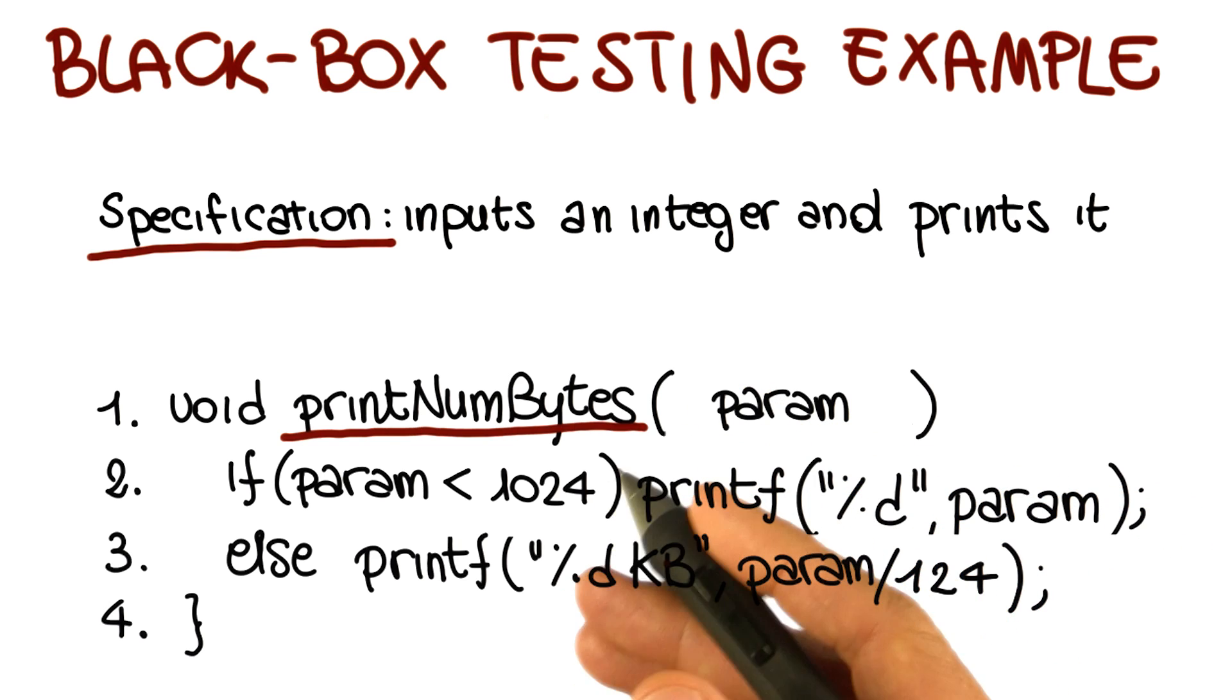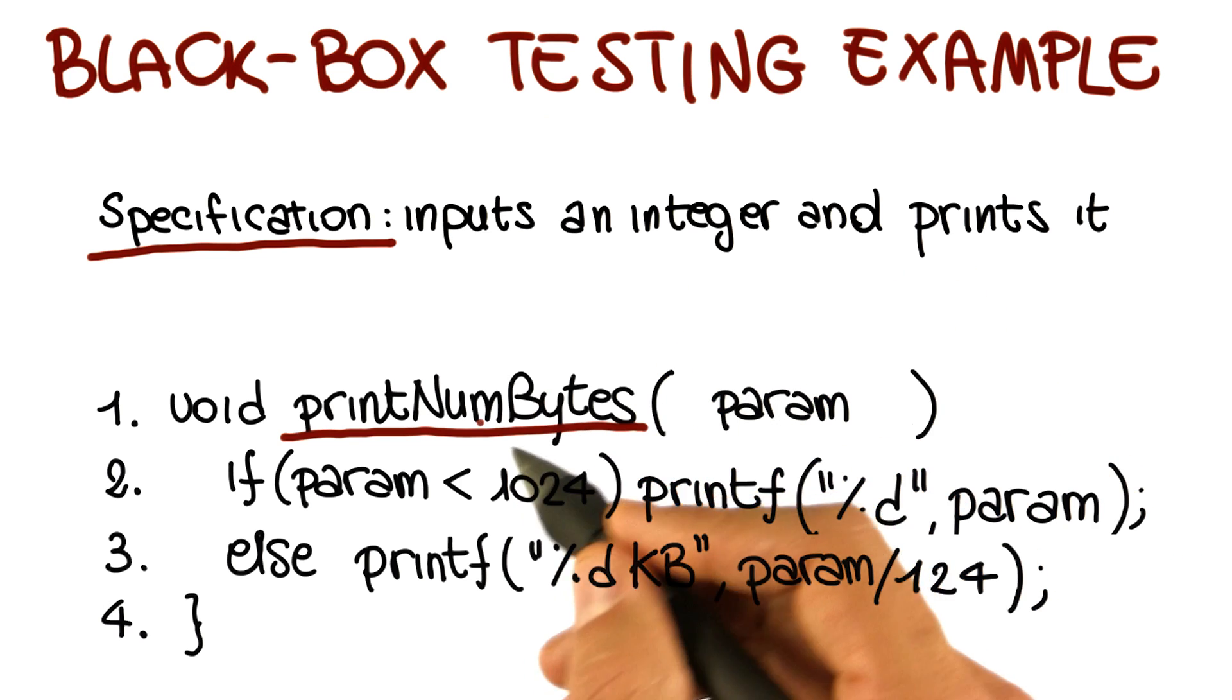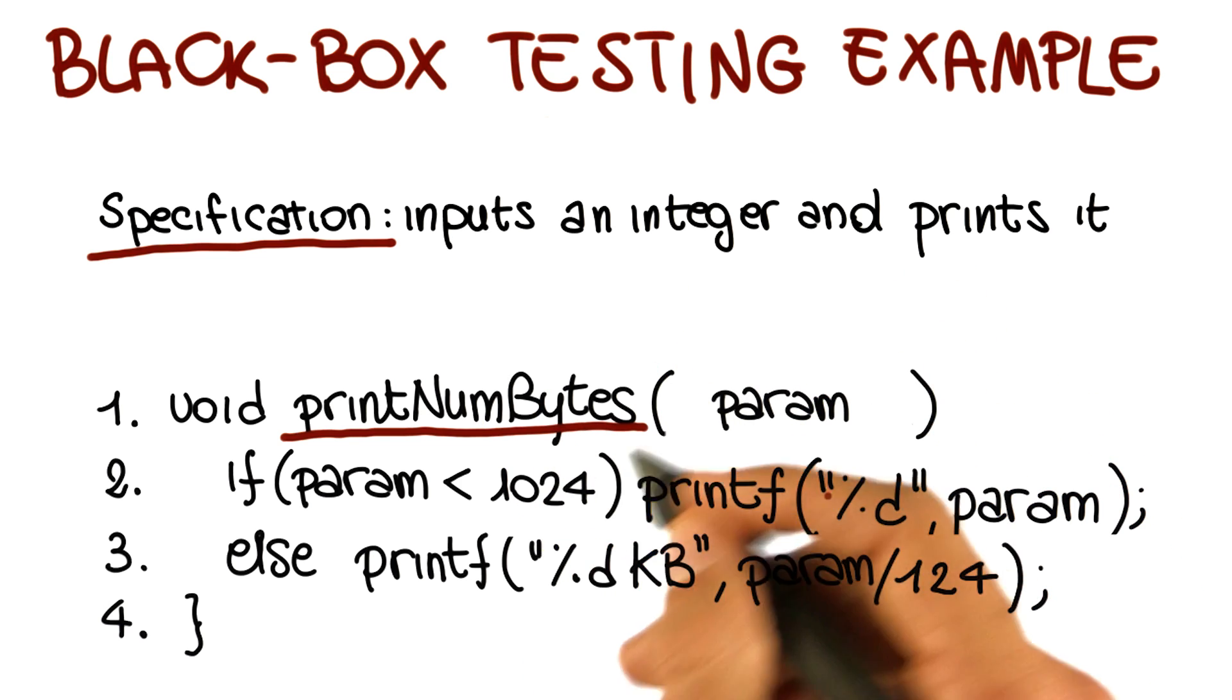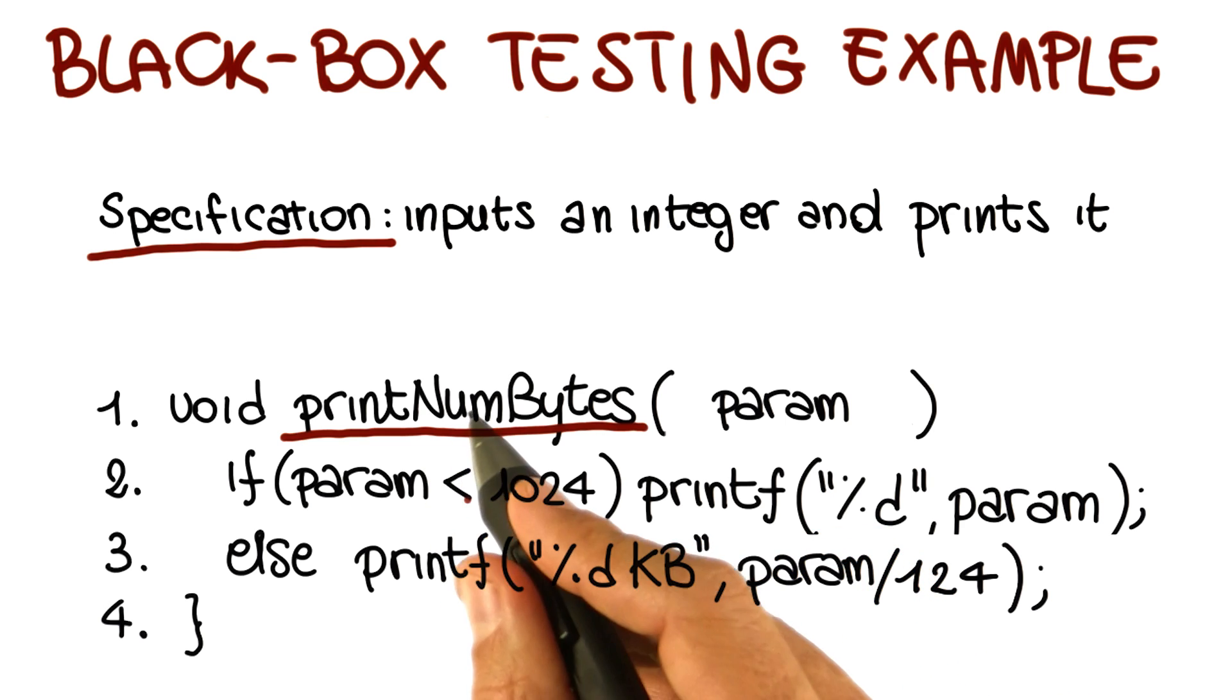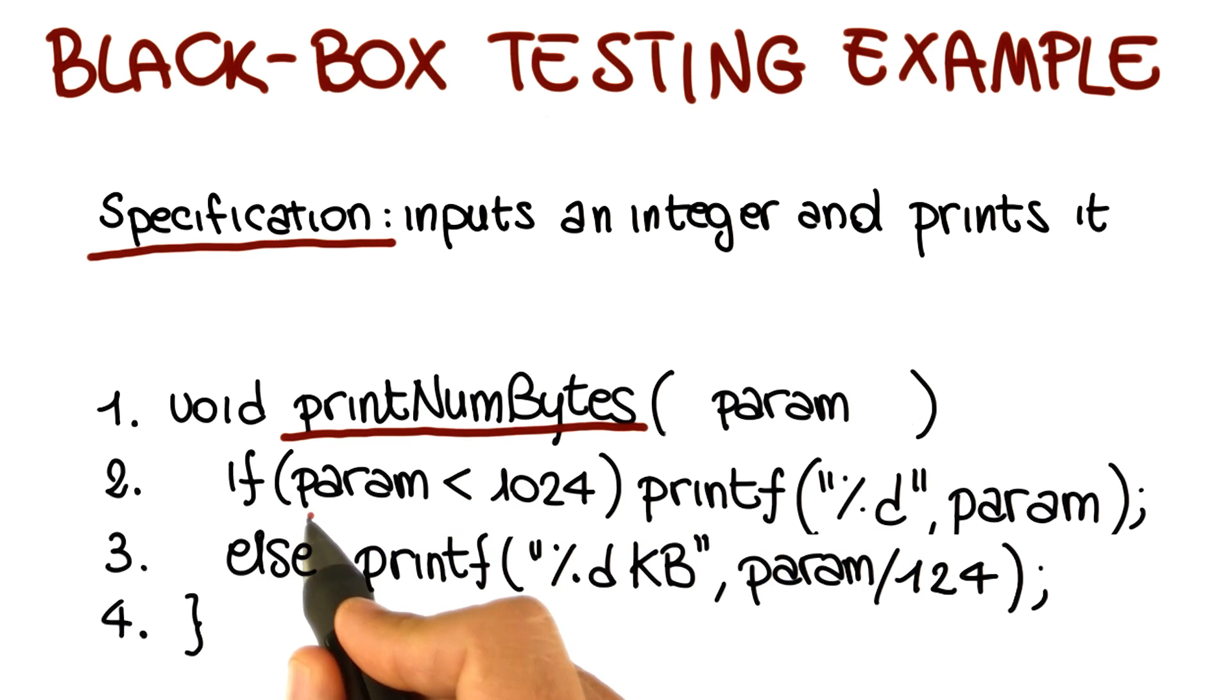And one thing that we notice right away is that although in the specification, numbers that are less than 1024 and numbers that are greater or equal to 1024 are exactly equivalent from the specification standpoint, they're however treated differently in the code. So the developer decided that the program was just going to print the value of the parameter if it's less than 1024, but it was actually dividing it by 1024 and printing it with a kilobyte mark after it, if it were greater than 1024.